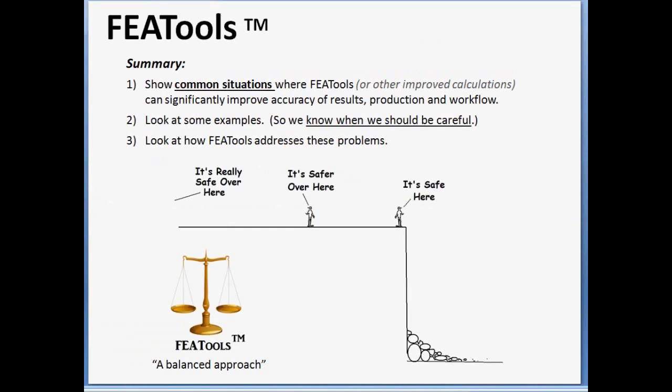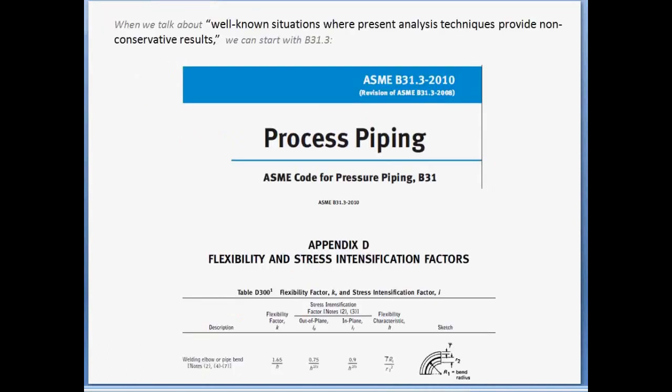In this presentation, we're going to look at these types of common situations in piping and pressure vessel design where there are known issues. We're going to look at examples where more applicable analysis, like FEA tools, can produce a much more realistic solution. Just because a piping system doesn't fail doesn't mean it's safe. Being safe in an industrial plant environment generally means having a code-intended safety factor. When we talk about well-known situations and limitations, we can look at some warnings that are given to us by the B31 code itself.